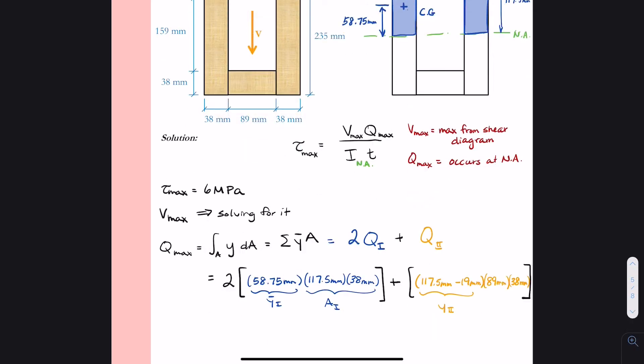And so now I've completed my calculation for Q. I just have to plug those numbers into my calculator. And we solve that Q max, which is at the neutral axis, is equal to 857,764.5 millimeters cubed.